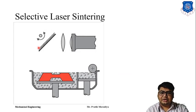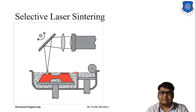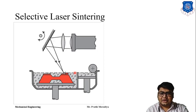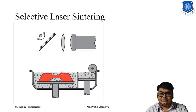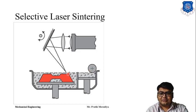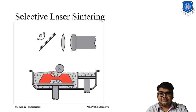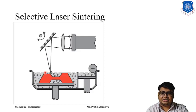In selective laser sintering, we use a material that can be sintered. Not all materials can be sintered, but many can — such as ceramics and metals. We use such a material in powder form and apply laser light on it. The laser gives heat to the powder, and we apply the laser only where we want to solidify the powder. Where we don't want the powder solidified, we do not apply laser.